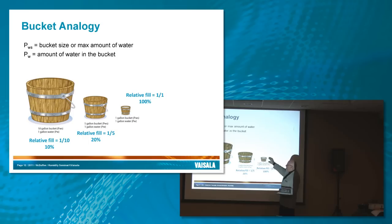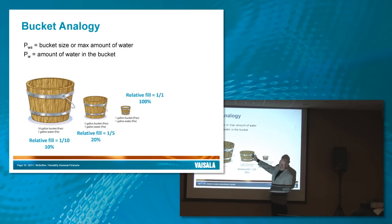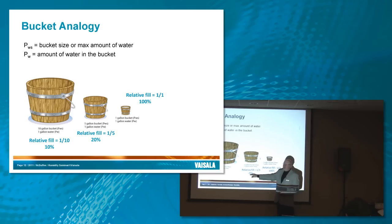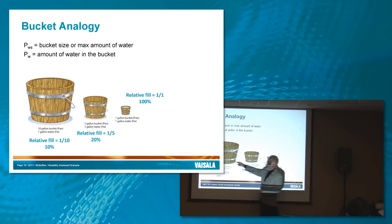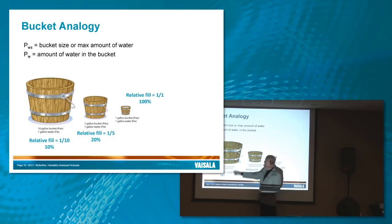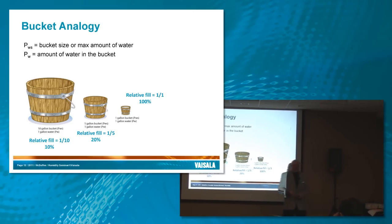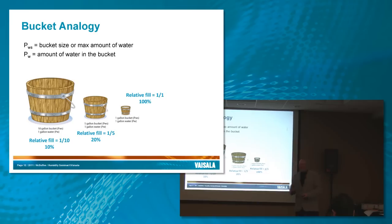So this would be like if you took a certain temperature, and then you raise the temperature, you increase the bucket size. So by raising the temperature, you go from 100% to 20%. And if you raise the temperature more or increase the bucket size more, now you're at 10%. And we'll see here in a couple of slides that relative humidity goes down as you increase the temperature.